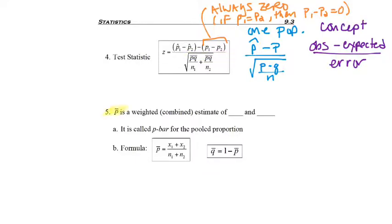So p bar is the weighted or combined estimate of population one and population two. Of course, we'll be using p1 and p2-hat, the sample proportions, because that's all we have.